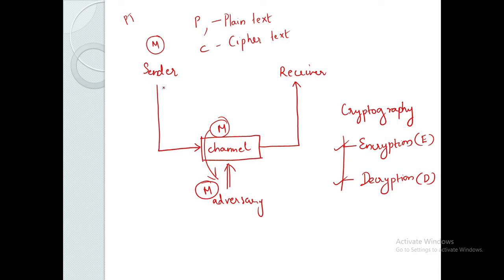On the sender side, the plain text message can be converted to a coded message — a secret code — using the encryption algorithm E. The coded message is the ciphertext. So the process of converting plaintext to ciphertext is called encryption, as you can see in the next figure.